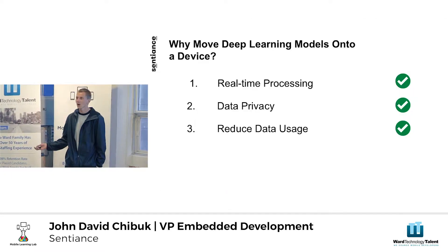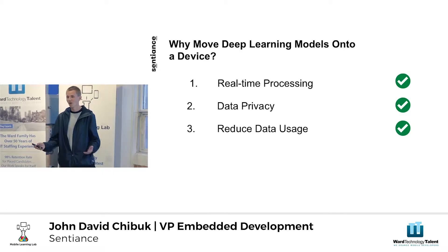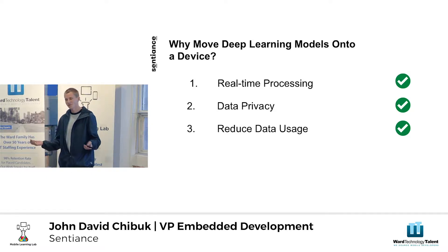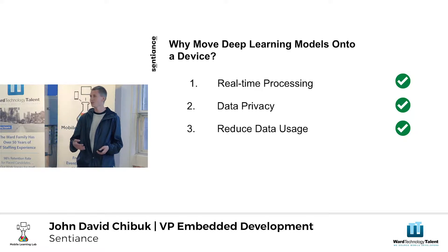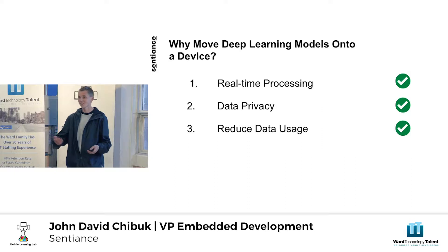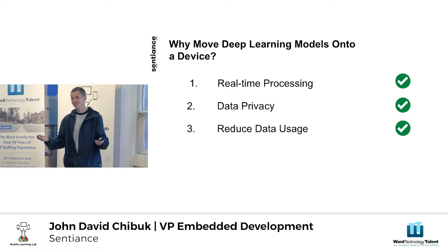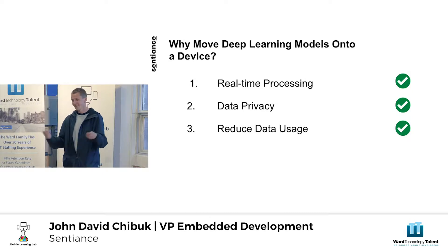There are three main reasons why you might put a classification model on your phone or on an IoT device. The first one is real-time processing. It allows you to give more pertinent feedback immediately to a user and you don't have to worry about sending data over a network and waiting for a response back. Or if it was an IoT device, it could be for a Bluetooth connection that might drop and cause issues.